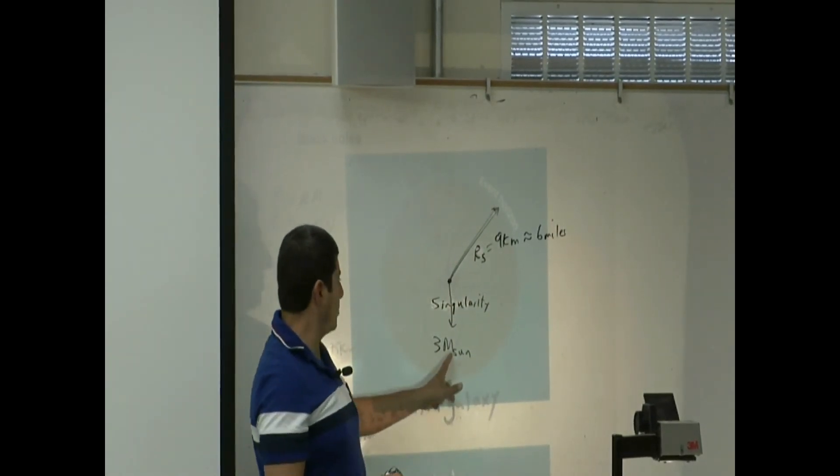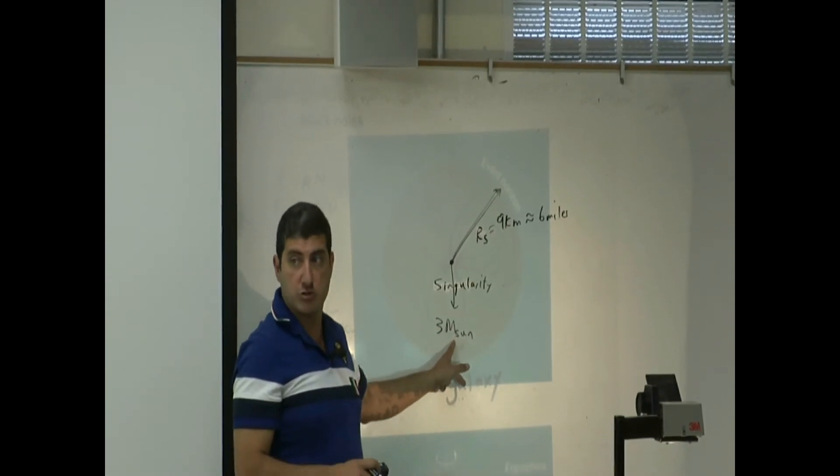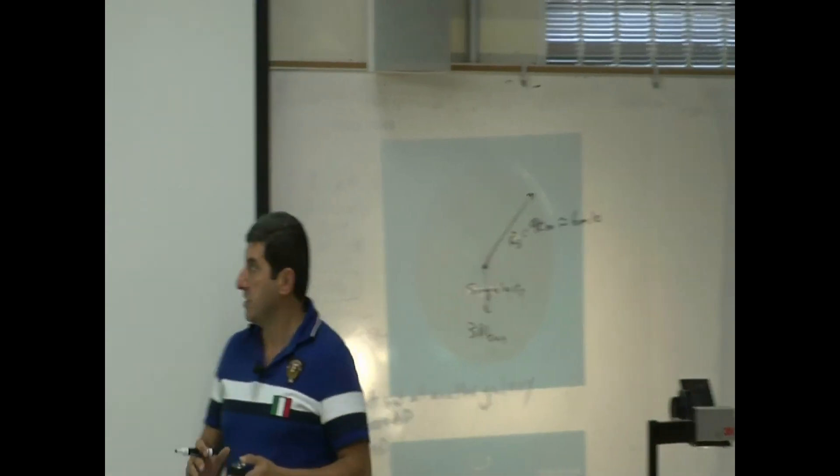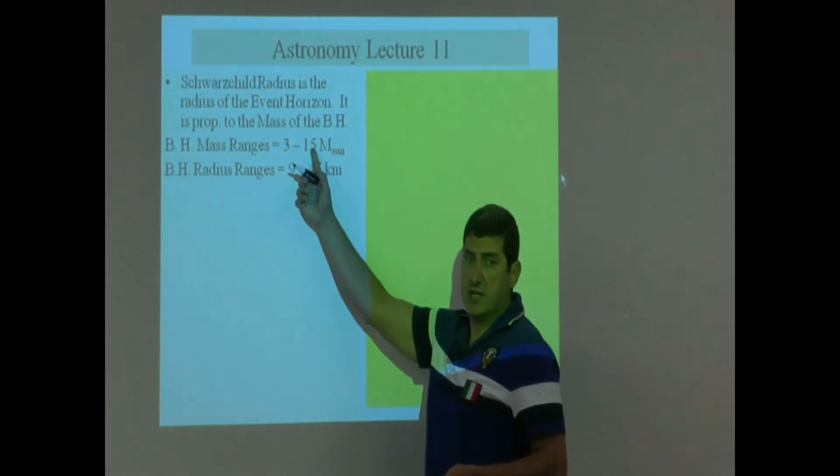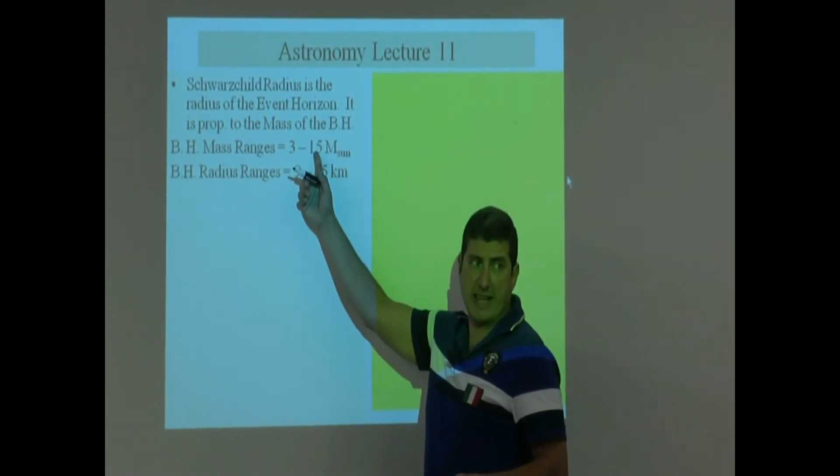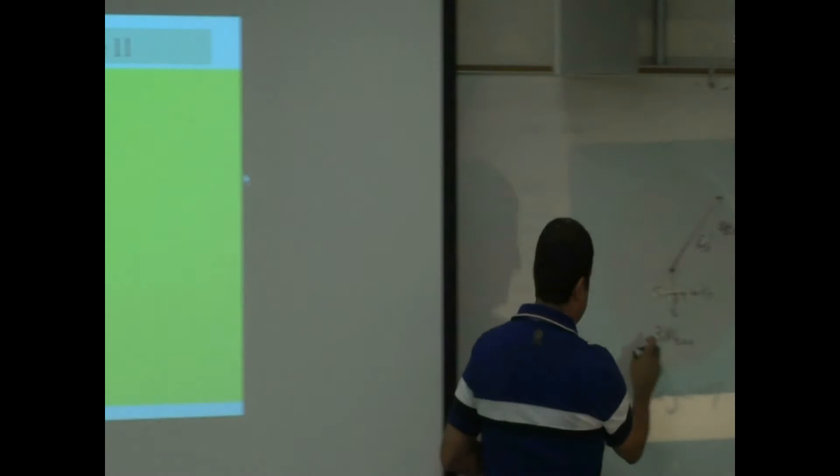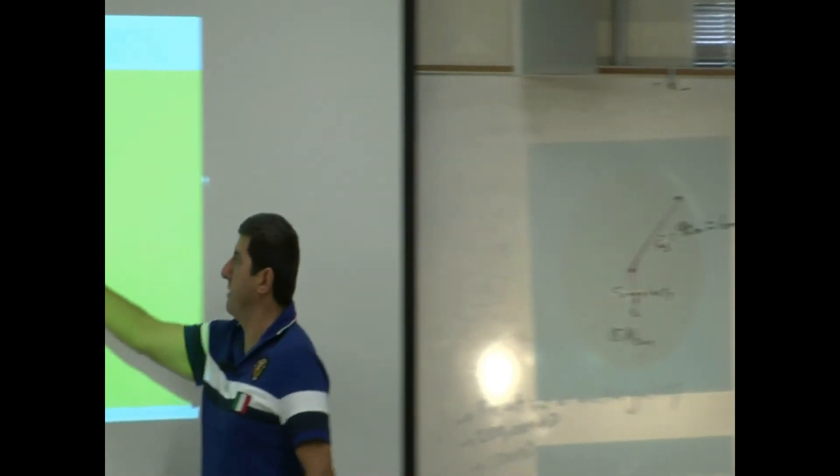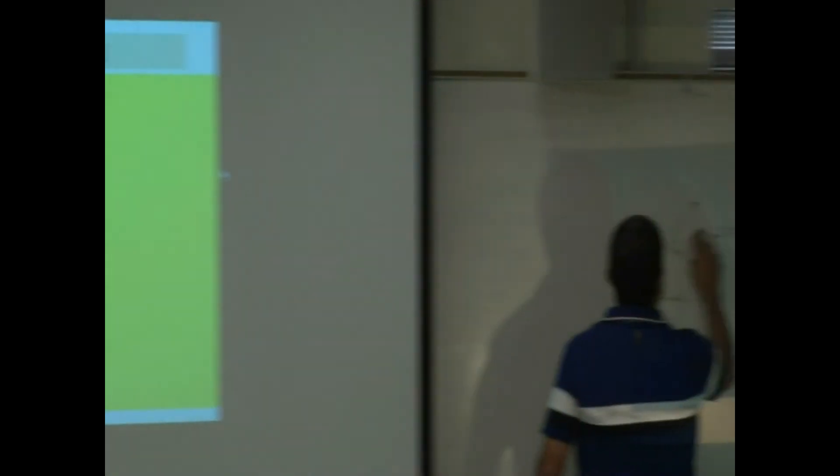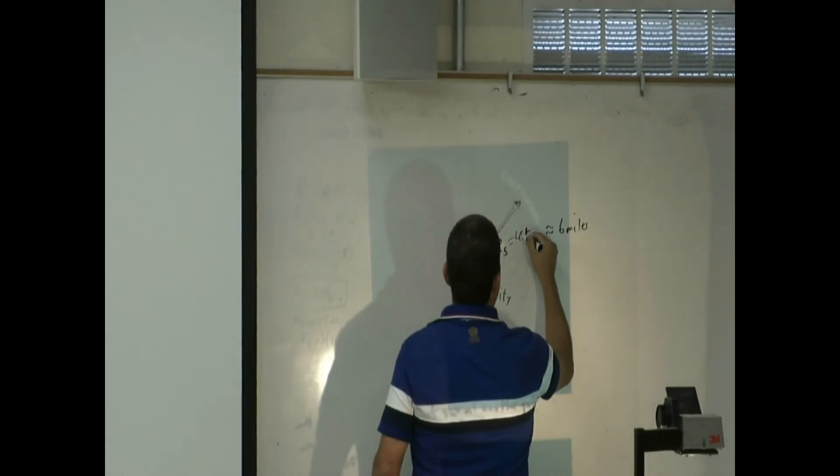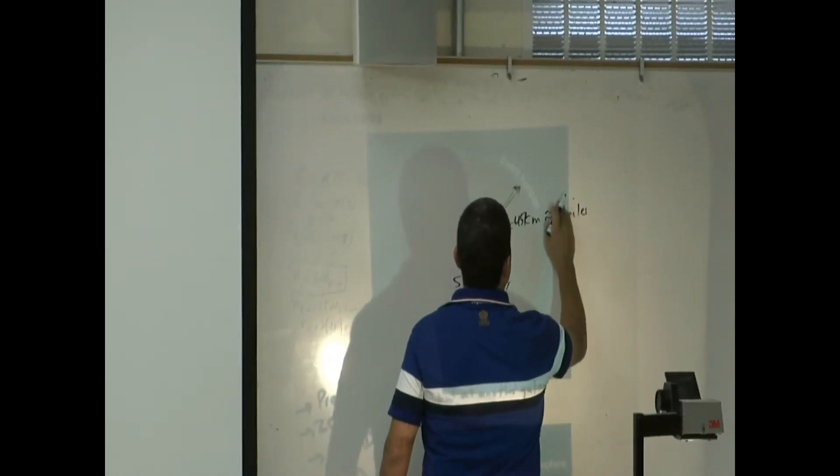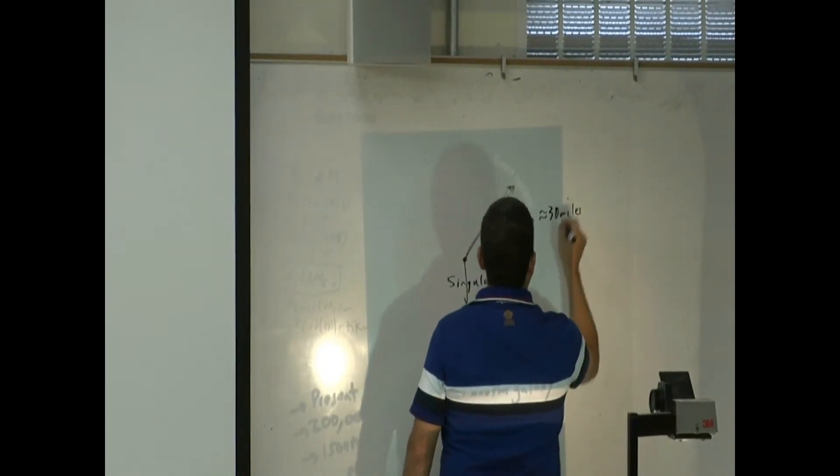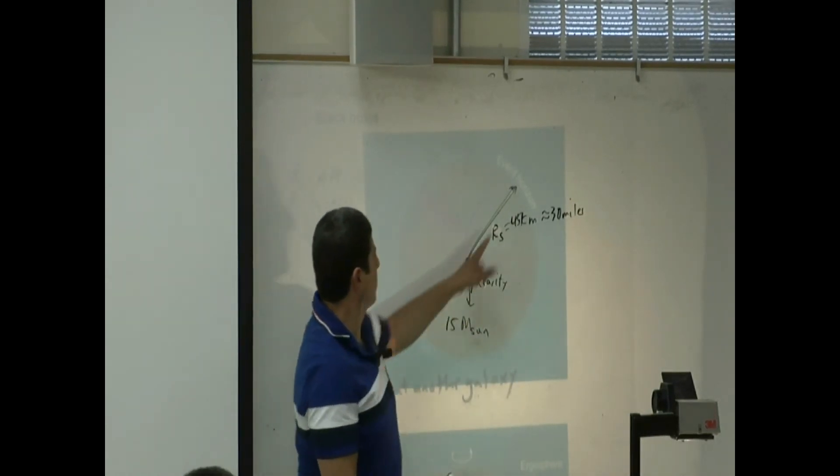So if you have a three solar mass black hole, that's about the smallest black hole you can have and the lightest black hole. It's going to be about six miles radius, nine kilometers. And then, on the heavy side, 15 solar mass black hole. If this guy is 15, it's going to be bigger. And its radius is going to be 45 kilometers, which is about 30 miles. So 45 kilometers is about 30 miles.